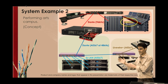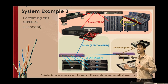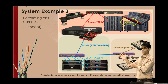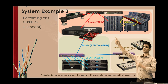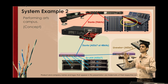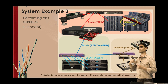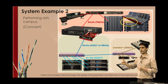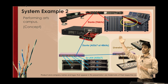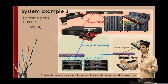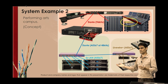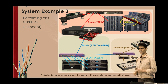Here is a second example with a Dante live sound system in a performing arts campus. The RSIO64D provides a sample rate converter to bridge between the two clock domains, so we can use a 96kHz system for live sound while simultaneously running a 48kHz system for background music and the radio station equipment.